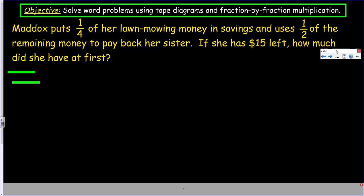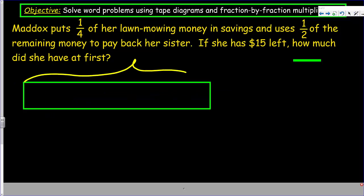This will be probably as challenging. Let's take a look. Again, we're looking at the same objective. In this case, we have Maddox. She puts one quarter of her lawn mowing money in savings, and uses one half of the remaining money to pay back her sister. If she has $15 left, how much money did she have at first? This problem looks a little bit different than what we've done in the past. See, in the others, we always knew what the hole was, and this problem we don't. It's almost like we need to work backwards on this problem.